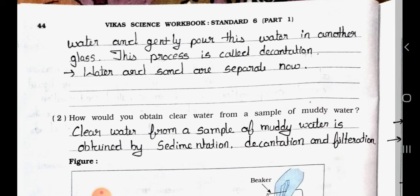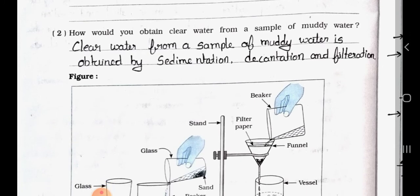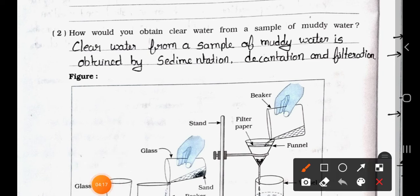Now see question number 2: How would you obtain clear water from a sample of muddy water? Answer: Clear water from a sample of muddy water is obtained by sedimentation, decantation and filtration.